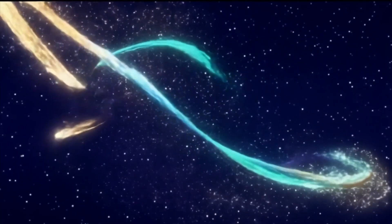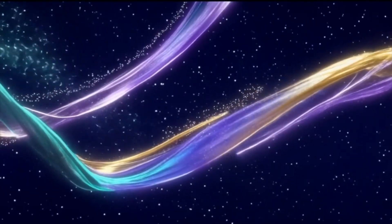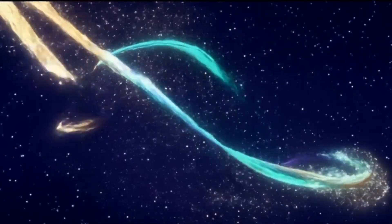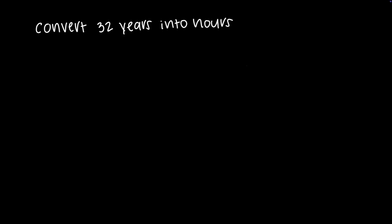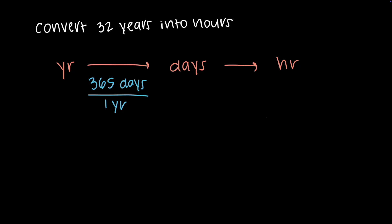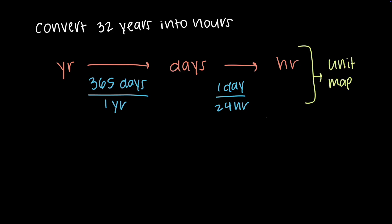Before we look at units specific to chemistry, we can explore how dimensional analysis works for units we've seen in our daily lives. For this example, we are going to convert 32 years into hours. We can't jump straight from years to hours, but we can find the different relationships that connect them. From years, I can convert to days and then hours. What I'm doing here is creating a unit map to help track the different units I will be converting to with their conversion factors.